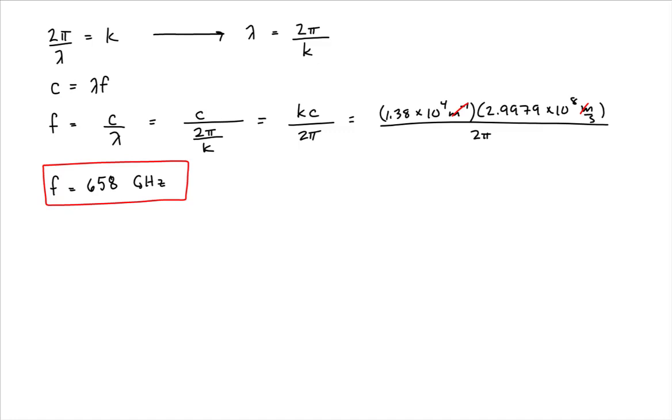Now, the last thing we need to do to find the function for the electric field is to figure out its amplitude. And to figure out its amplitude, I'm going to use the relationship that the speed of light is equal to the ratio of the magnitude of the electric field to the magnetic field. Now, for this problem, that's going to simply be the ratio of the amplitude of the electric field to the magnetic field, because the cosine terms are identical.